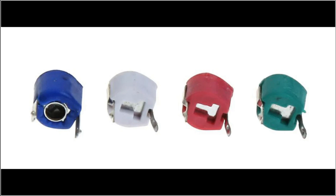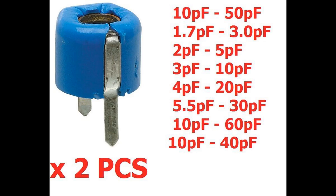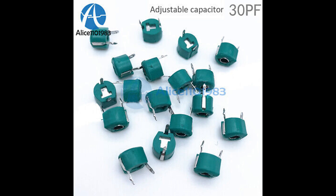Trimmer capacitors are used in various applications where fine-tuning and calibration of capacitance is required. They are especially useful in circuits where precise control of frequencies, impedance, or other characteristics is necessary. In radios, transmitters, and receivers, trimmer capacitors are used to adjust the resonant frequency of RF circuits, helping fine-tune circuits to ensure accurate reception and transmission of signals by adjusting the capacitance in LC (Inductor-Capacitor) circuits.